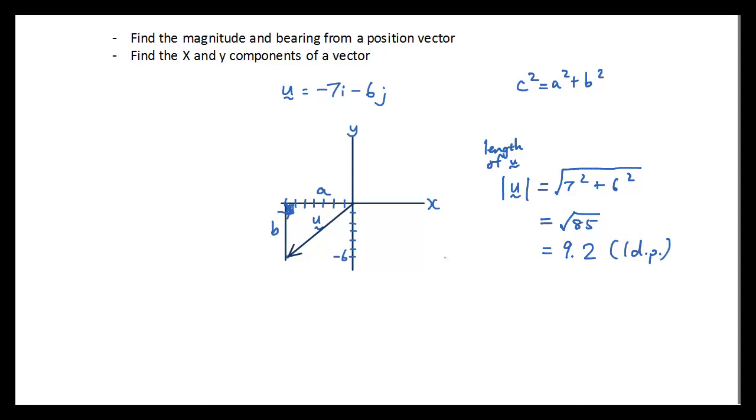So the answer is square root of 85, which is 9.2 rounded to 1 decimal place. So that's the magnitude of this vector. Now if you want a general formula for finding the magnitude, generally it's, well actually it always is, the number in front of i squared plus the number in front of j squared, and then square root. So you will sometimes see this general formula.